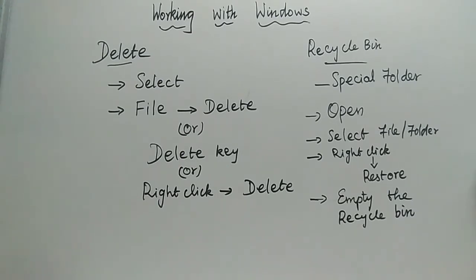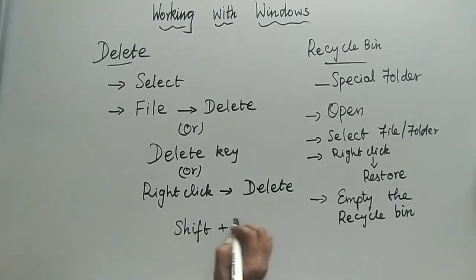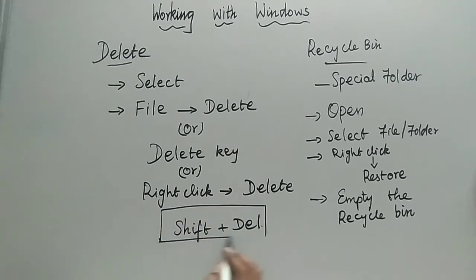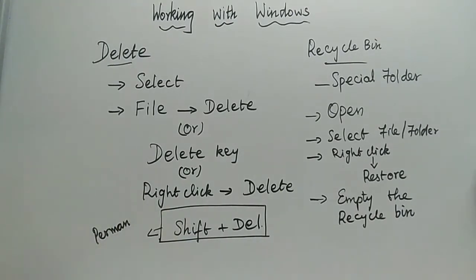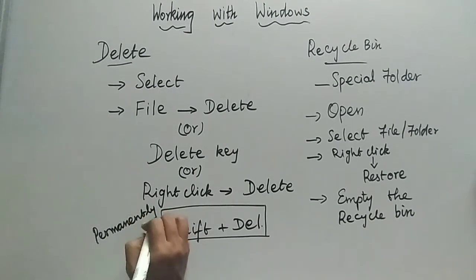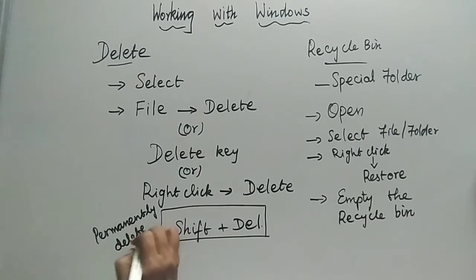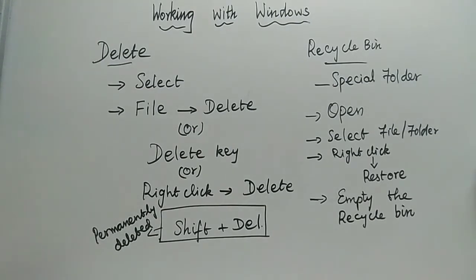If you want to delete a file permanently — that is, you do not want it moved to the Recycle Bin at all — you have the option Shift + Delete. Hold the Shift key and press Delete. This will permanently delete the file. It will not be seen in the Recycle Bin and you will not have the opportunity to restore it.